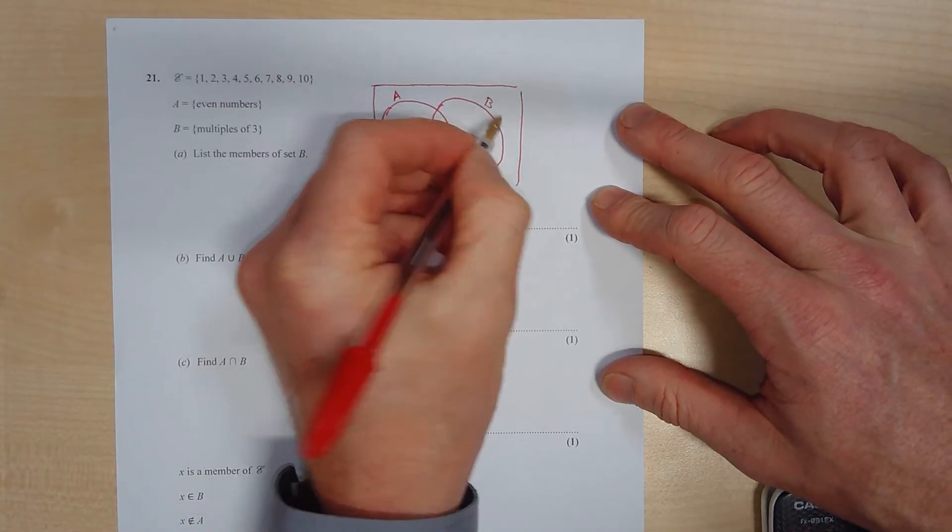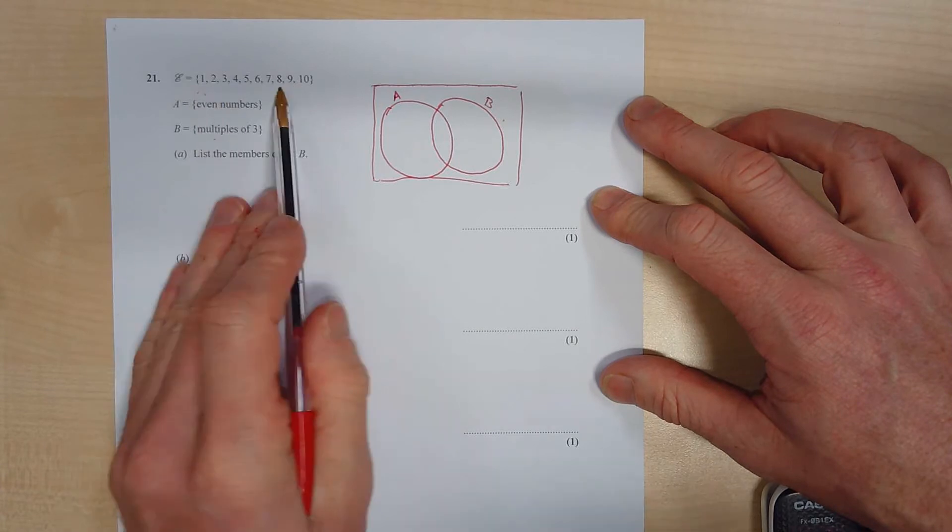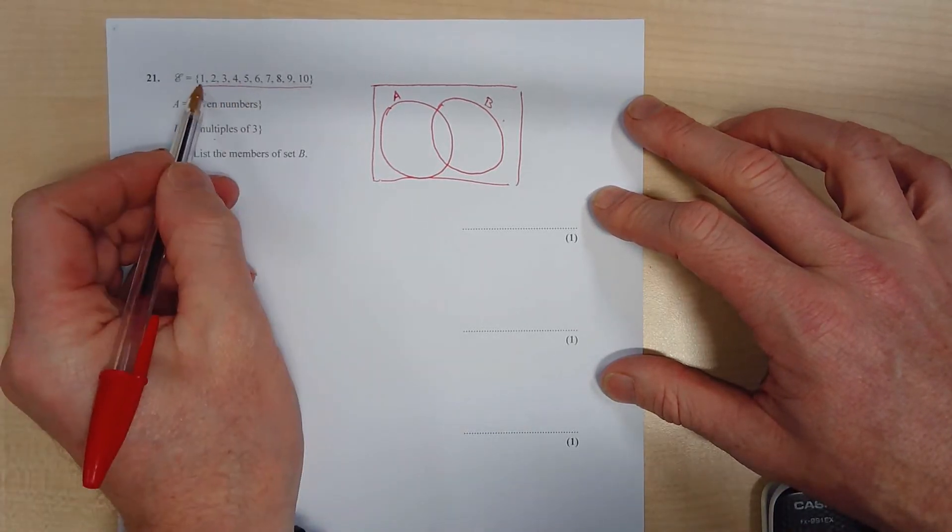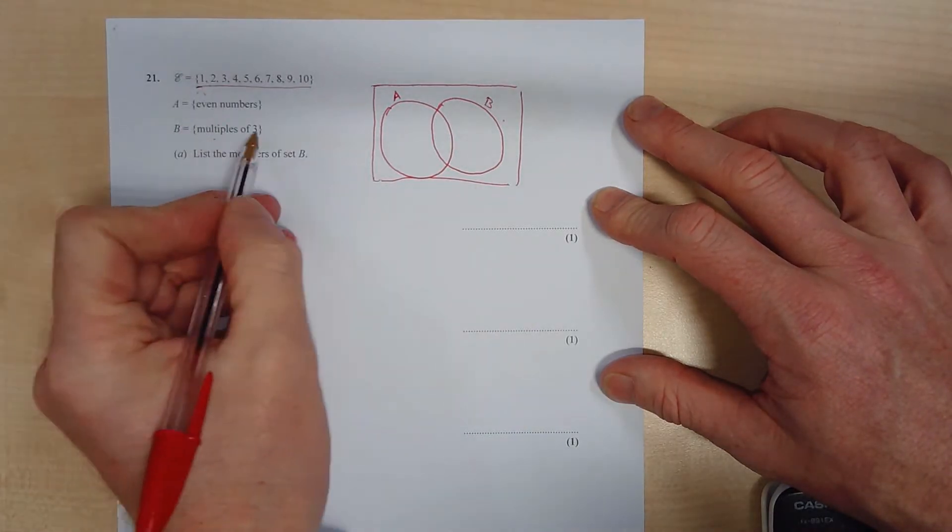So my two circles, this will make it much easier. And this is going to represent A, which are even numbers, and this circle is going to represent B, which are multiples of 3. Now we're only interested, this is called a universal set, so we're only interested in numbers 1 to 10.